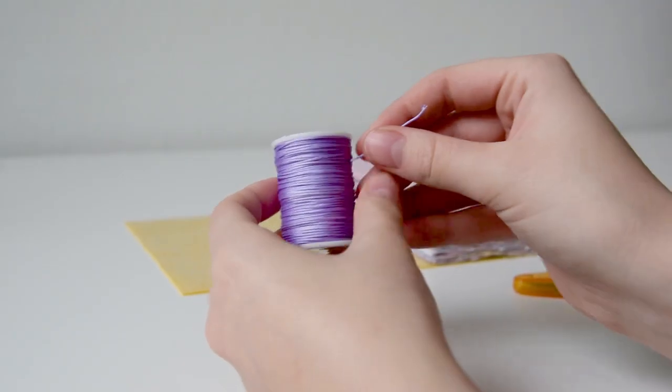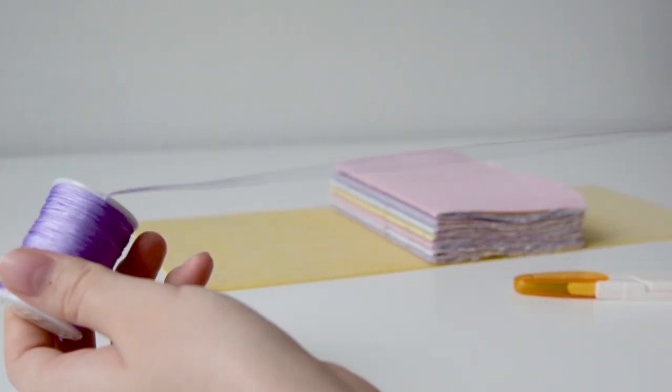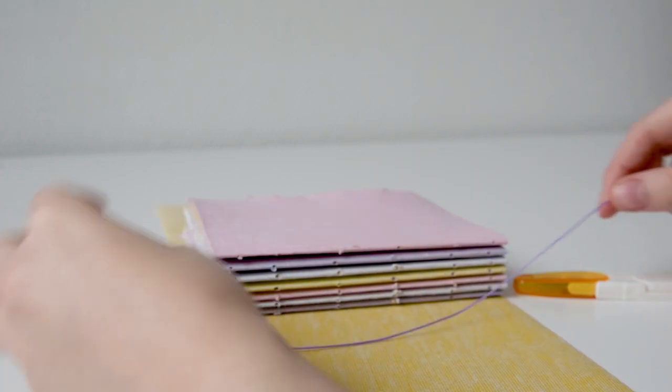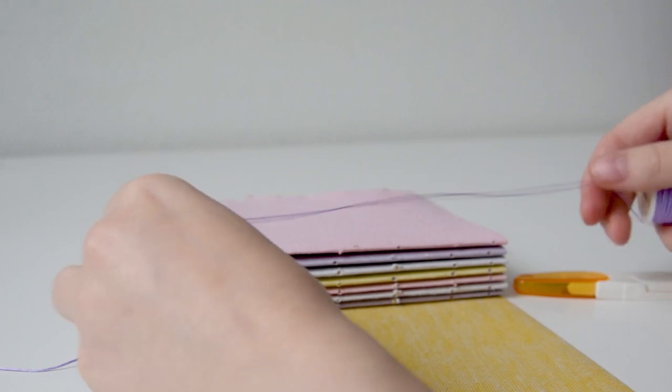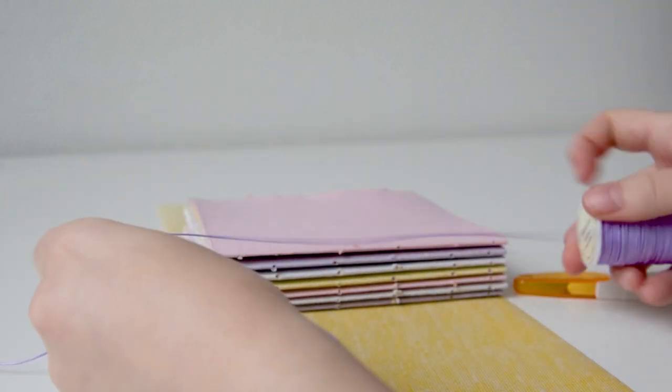Now for the fun part, the binding. Take your thread. You want to measure out one and a half times the amount of signatures times the length of your text block. So I am measuring out one and a half of seven is around 11 times the length of the text block.